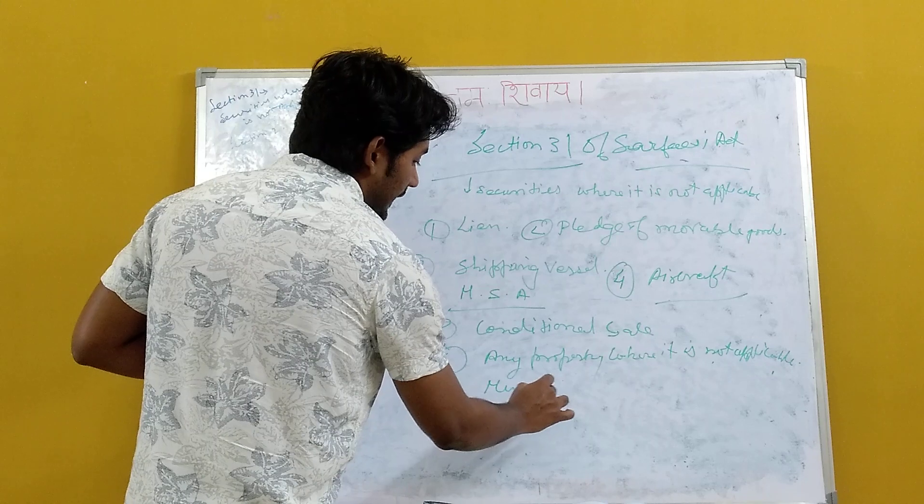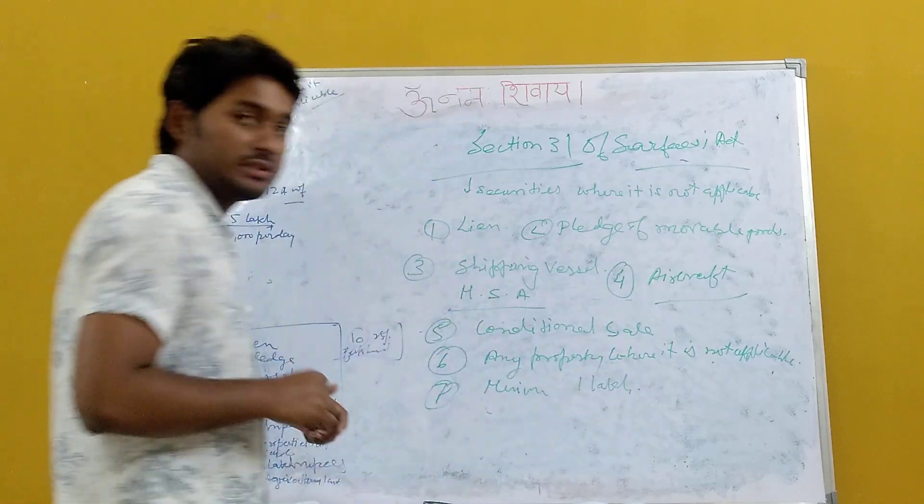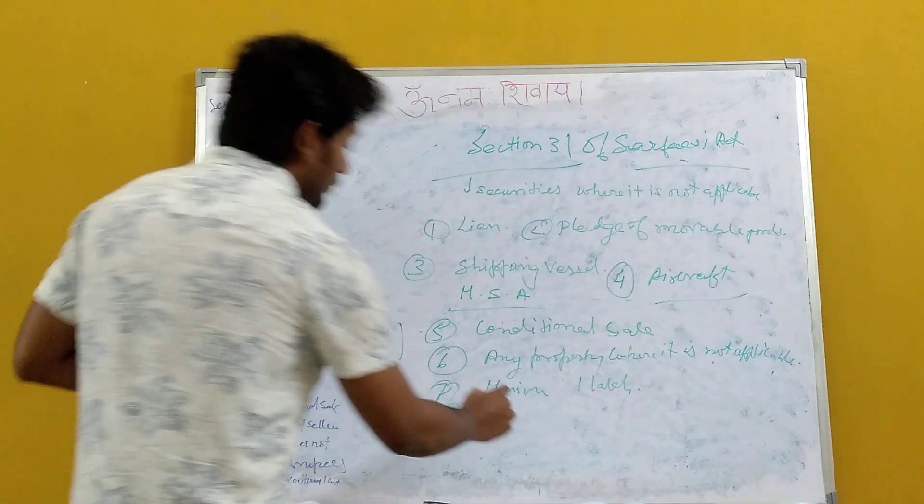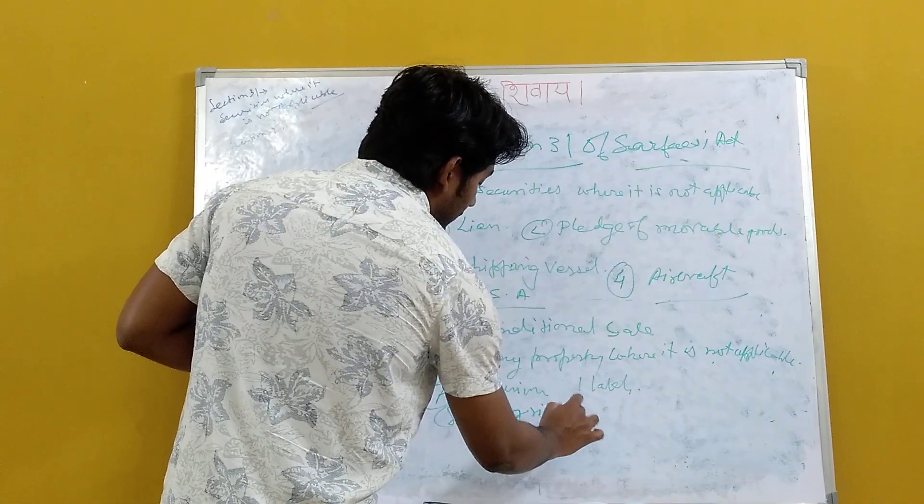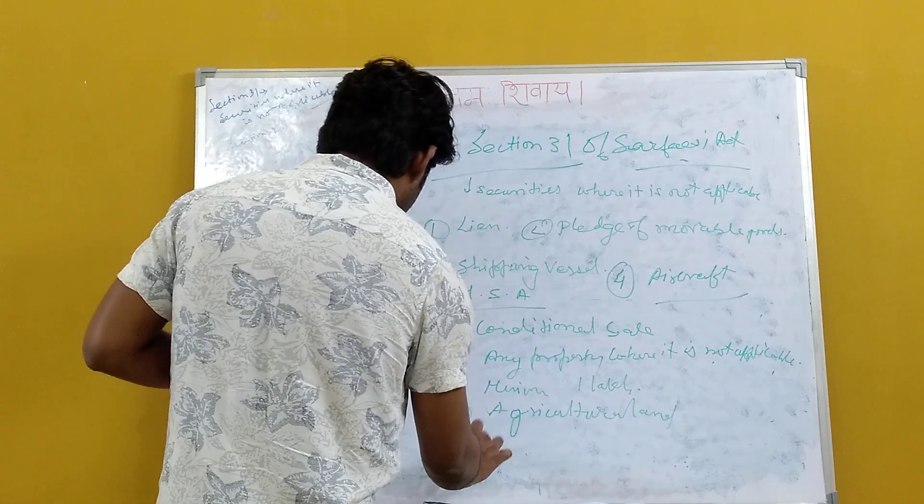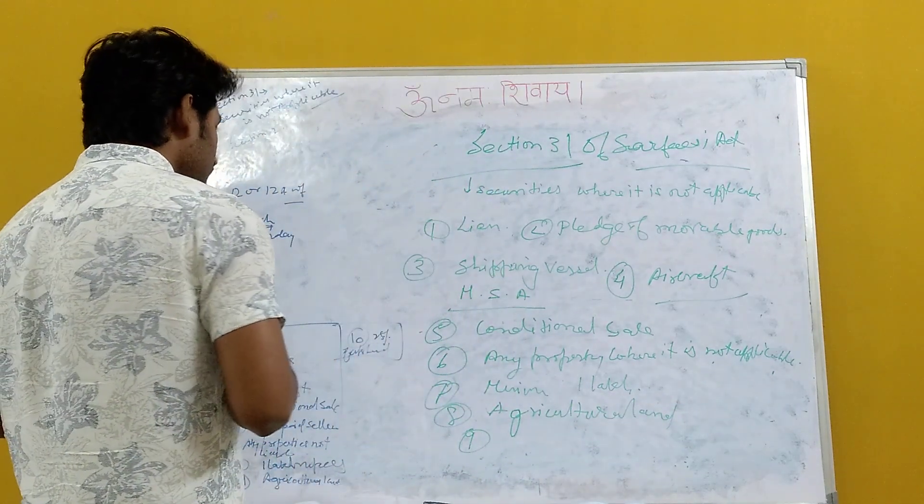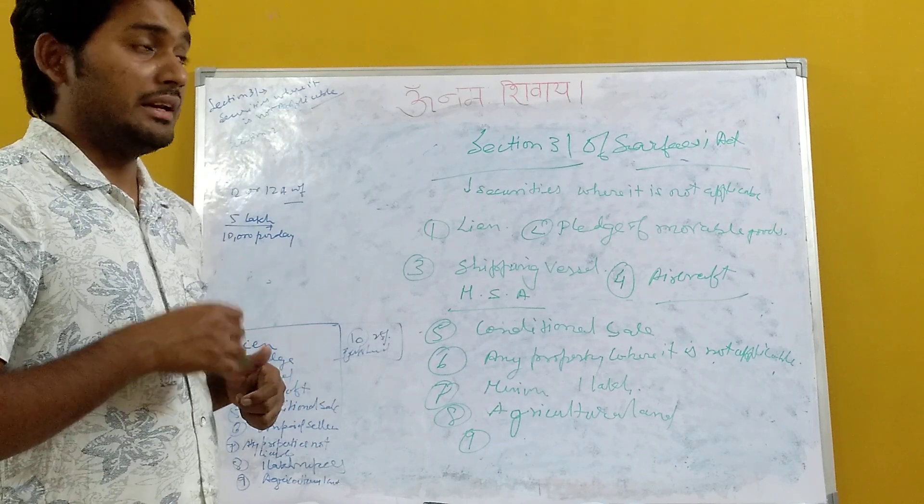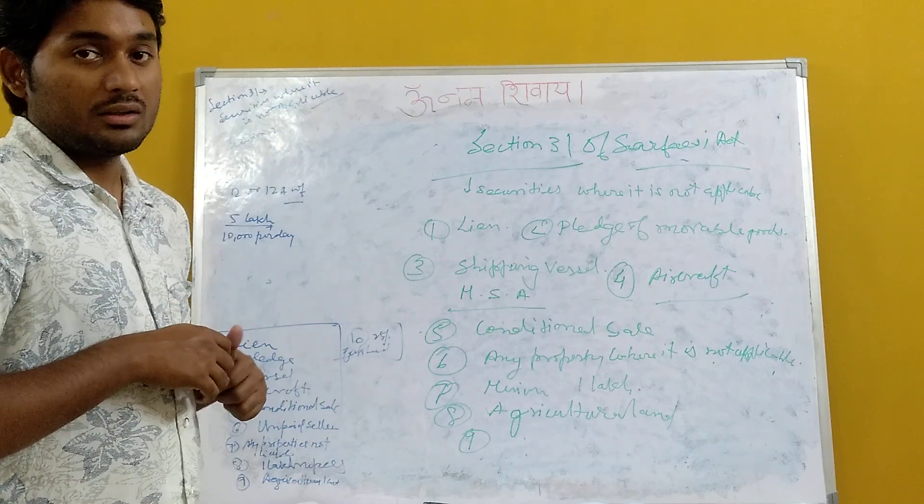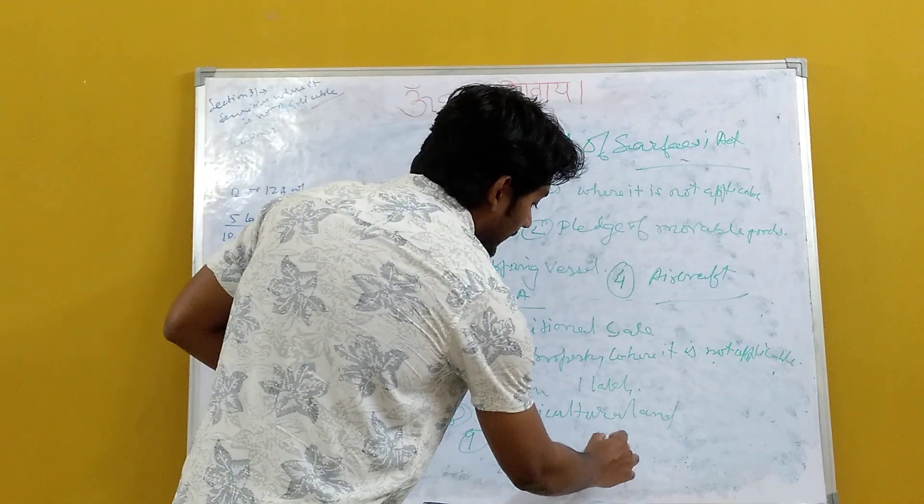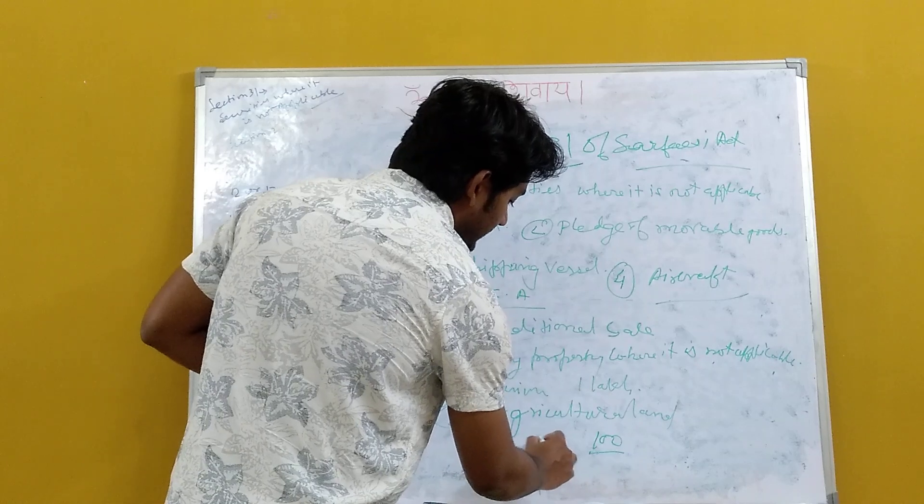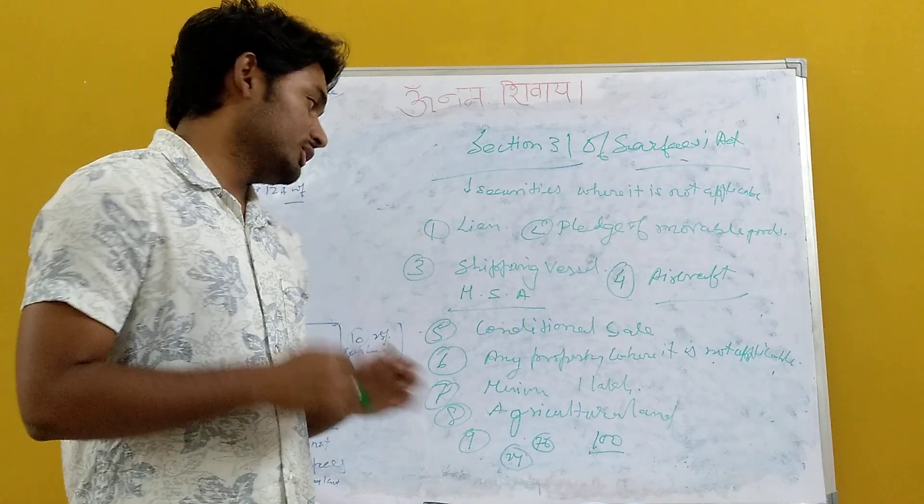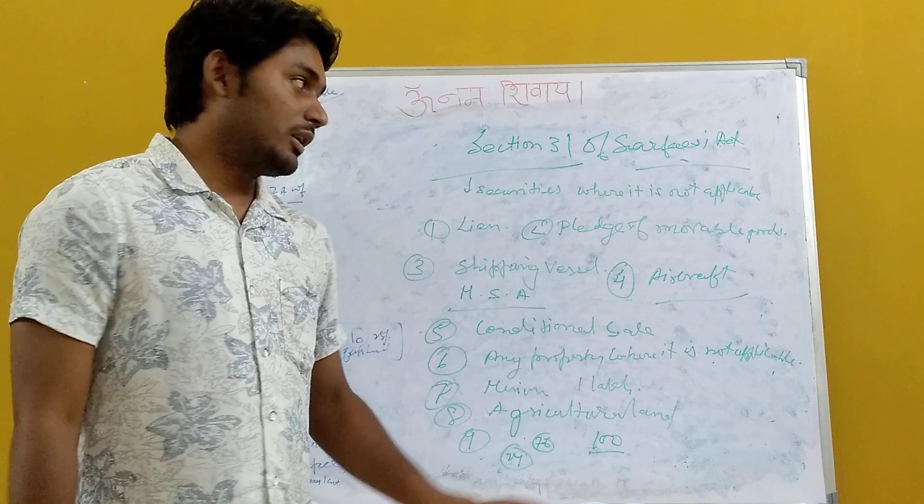Minimum value of loan outstanding should be 1 lakh. The property which has been mortgaged or the security interest has been created, it should not be agricultural land. In agricultural land, SARFAESI Act will not be applicable. Point number nine, any loan where the outstanding amount is less than 25% of the given amount, in that, the SARFAESI Act is not applicable. Suppose, any loan, 100 lakhs loan has been given, now the borrower has repaid 76 lakhs. Now, outstanding is only 24 lakhs. So, the outstanding amount is less than 25% of the amount. So there, SARFAESI Act will not apply. This is all about the SARFAESI Act.